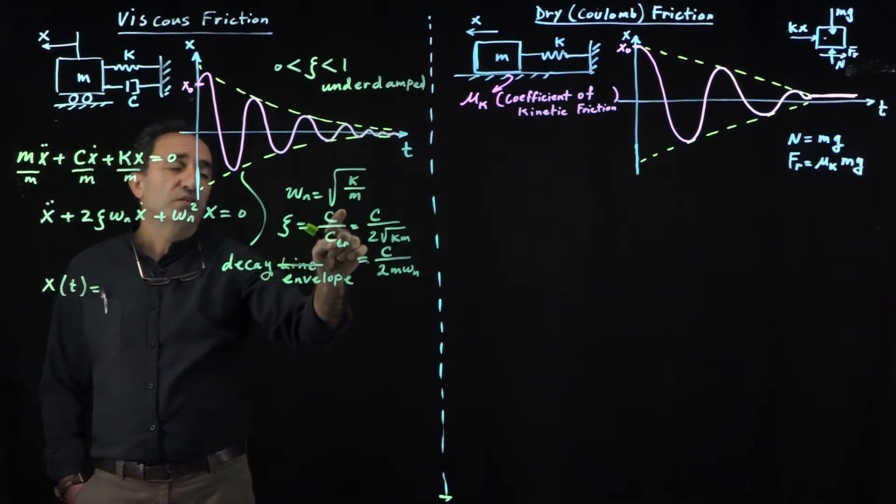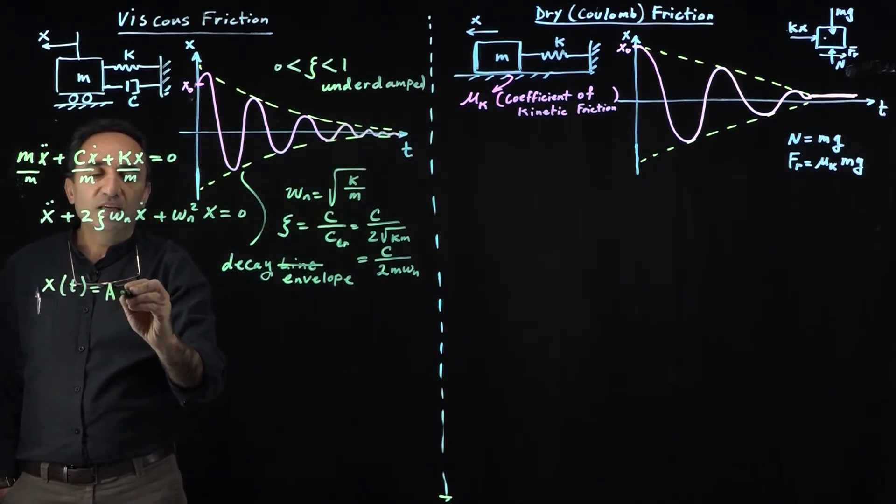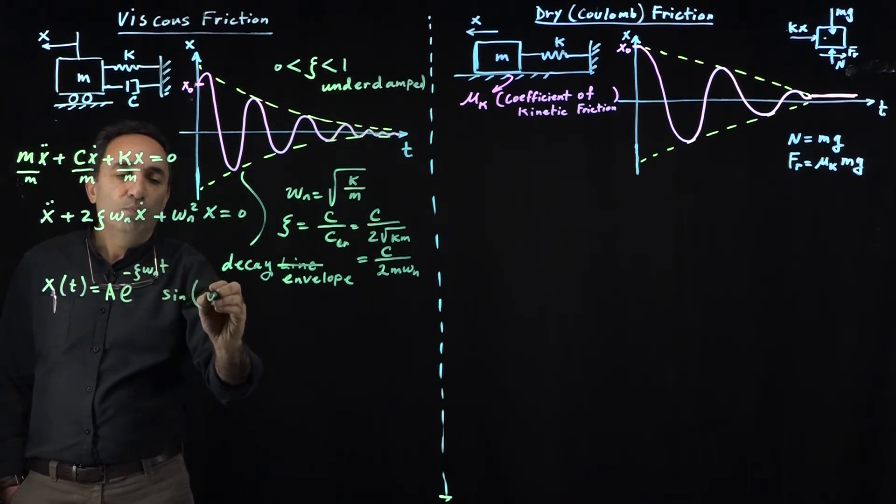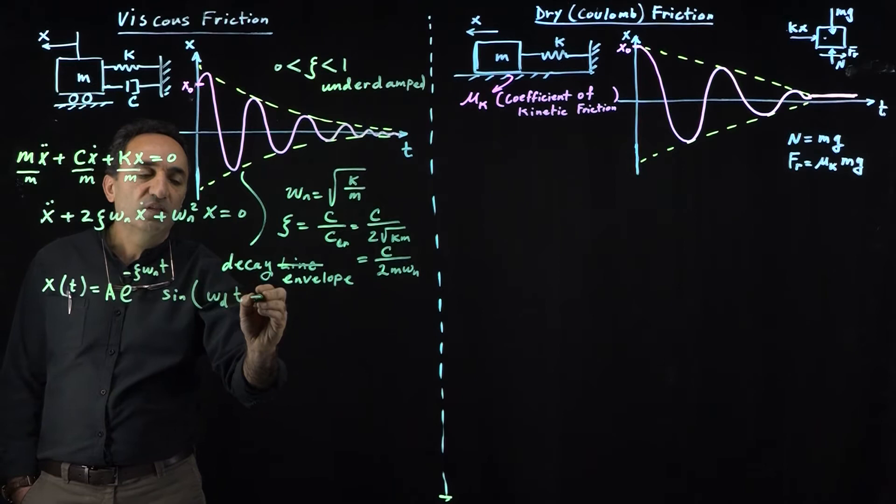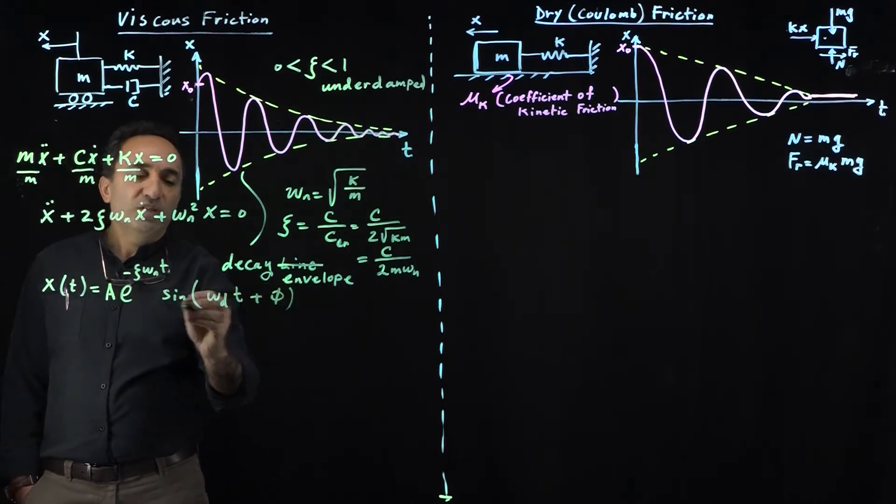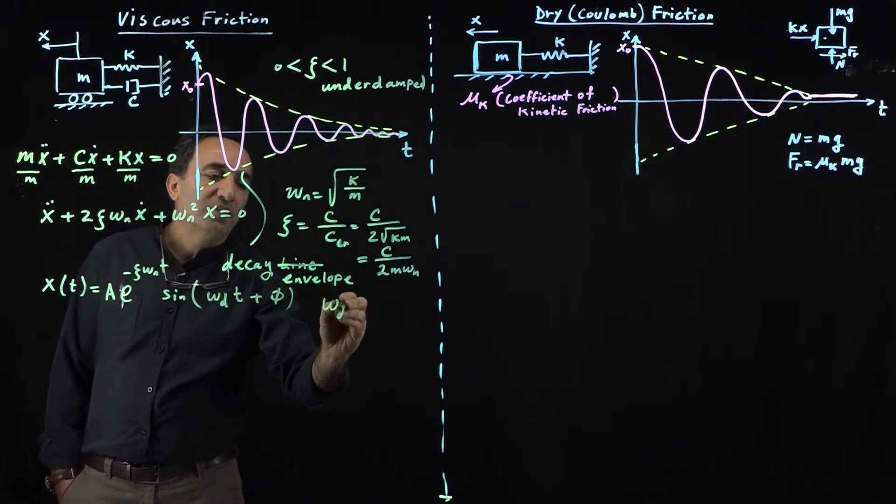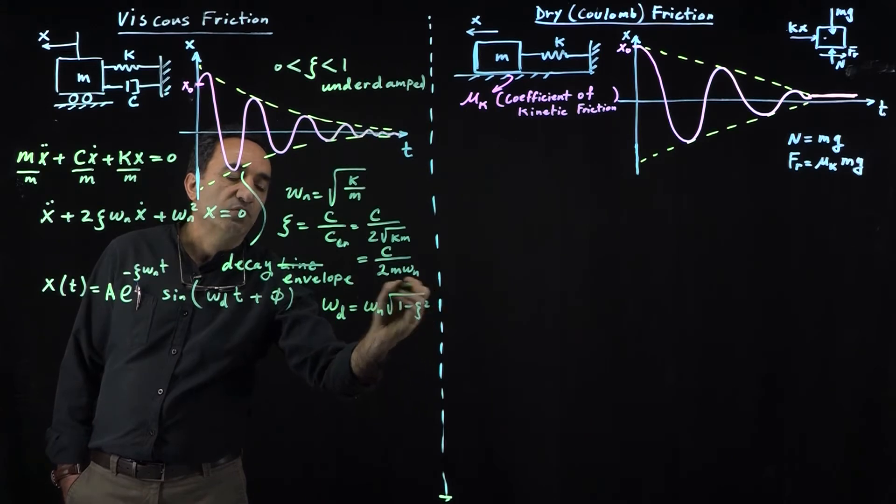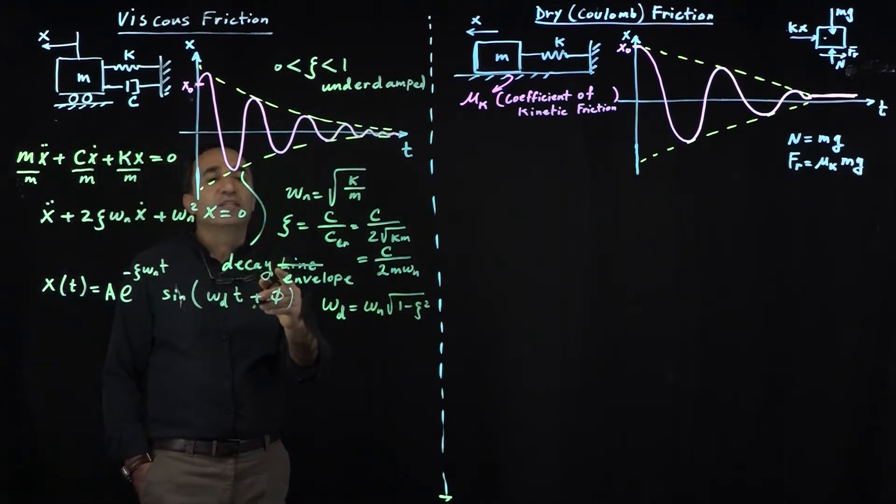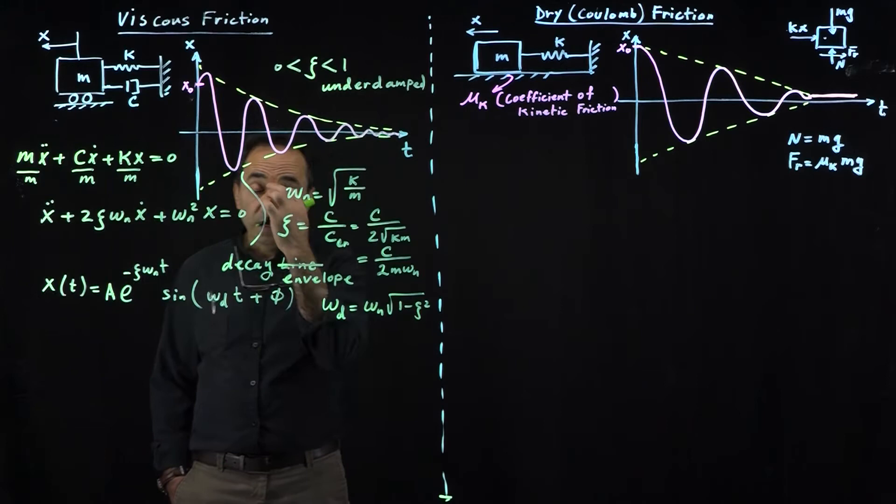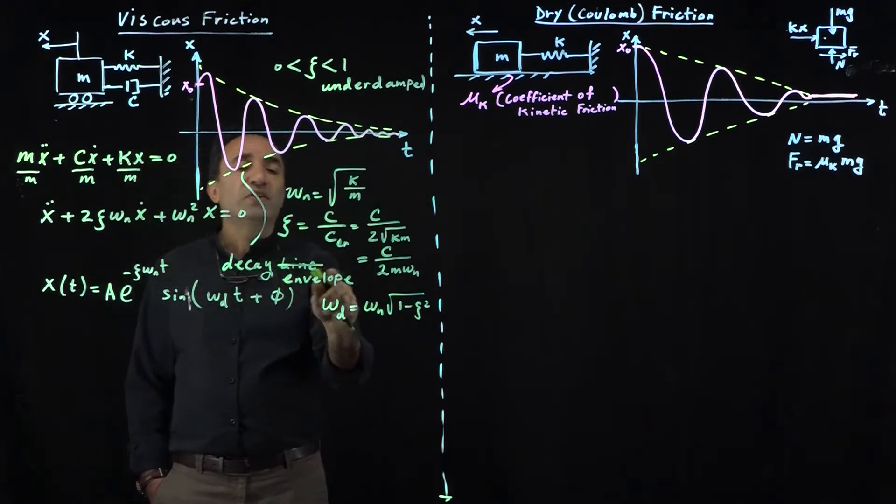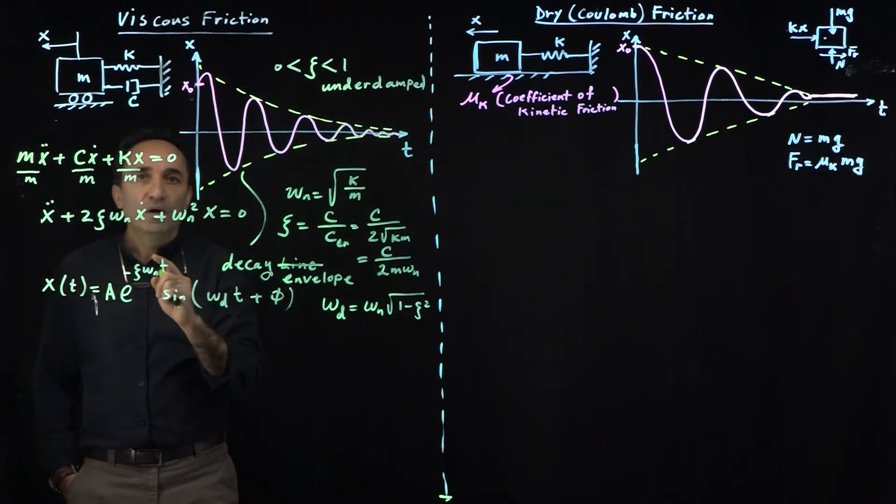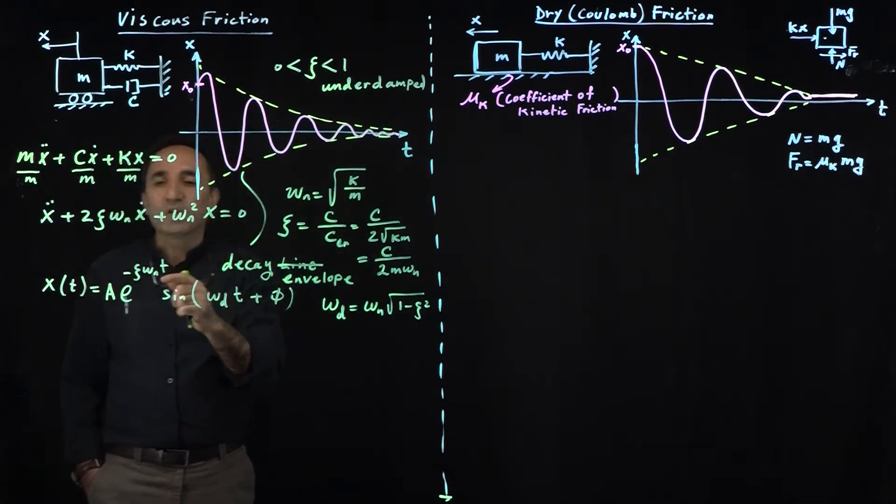This is an underdamped case, so it's going to be A e^(-zeta omega_n t) times sine(omega_d t plus phi). This omega_d is called the damped frequency and is simply omega_n times square root of 1 minus zeta squared. When you have an underdamped system, you have a damped frequency. The natural frequency of the system, square root of k over m, is altered.